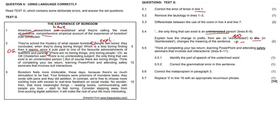5.5.1, think of completing your tax return, learning PowerPoint and attending safety seminars that involves dull interactions. Okay, we know you have a Concord error there. 5.5.1, identify the part of speech of the underlined word safety seminars. Safety seminars, you're describing the seminars, therefore safety here is going to be an adjective. And like we correctly saw, the grammatical error here is that S, so it should just be involved.